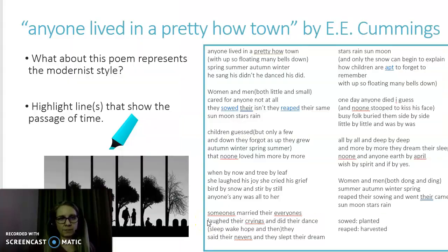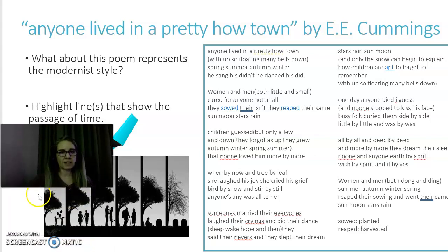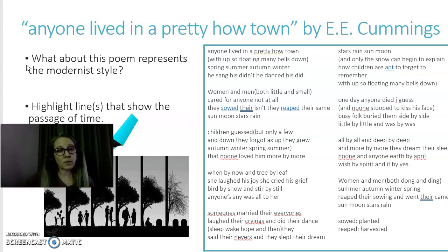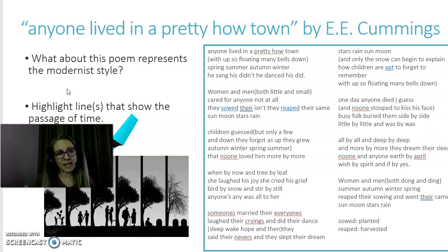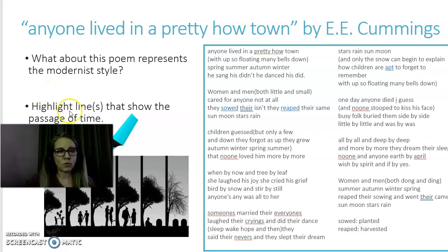We're going to start with modernist poetry. The first poem is 'Anyone Lived in a Pretty How Town' by E.E. Cummings. These are the questions I want you to think about: What about the poem represents a modernist style? And consider what evidence highlights the passage of time in this one in particular. Please pause the recording, read through it, and then consider the questions associated with it. Now that you've read through it, what about this poem represents the modernist style? Go back and look at the OHS and go through your reading journals to determine what evidence supports that. Also consider how the poet deals with the passage of time in this piece.